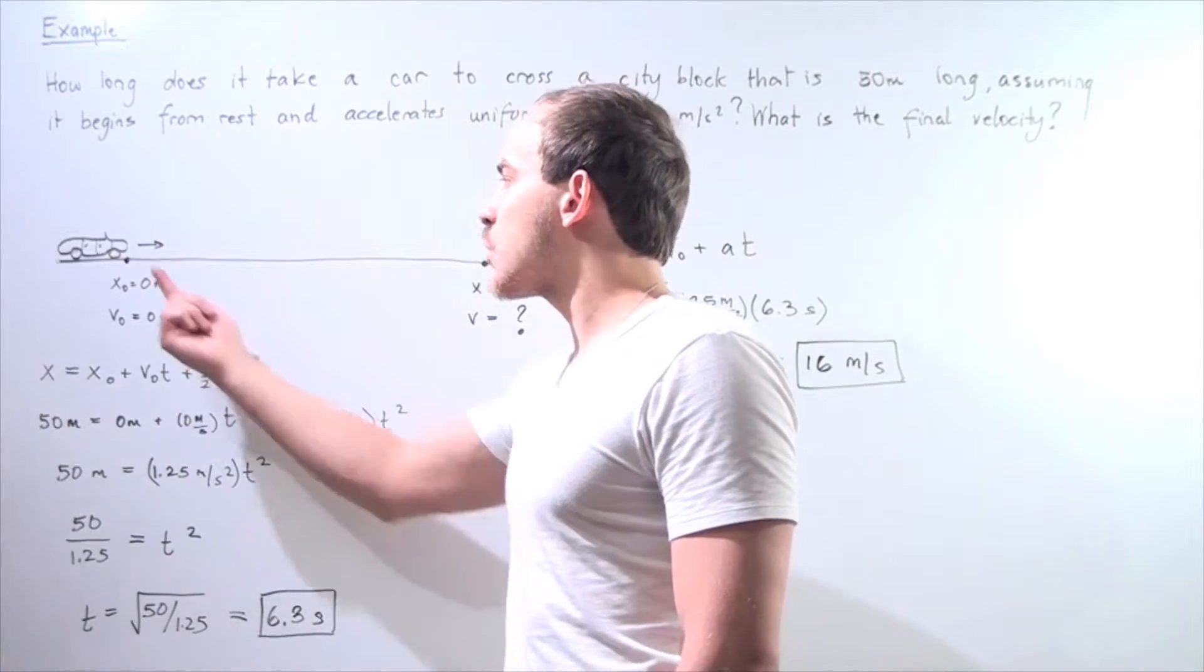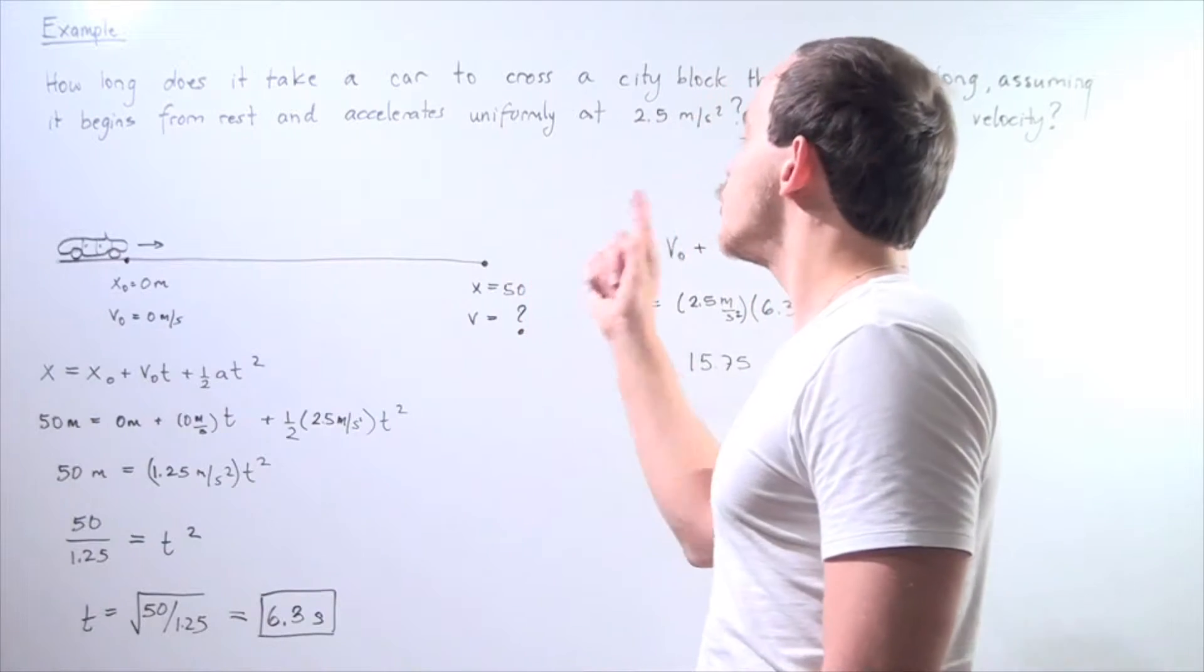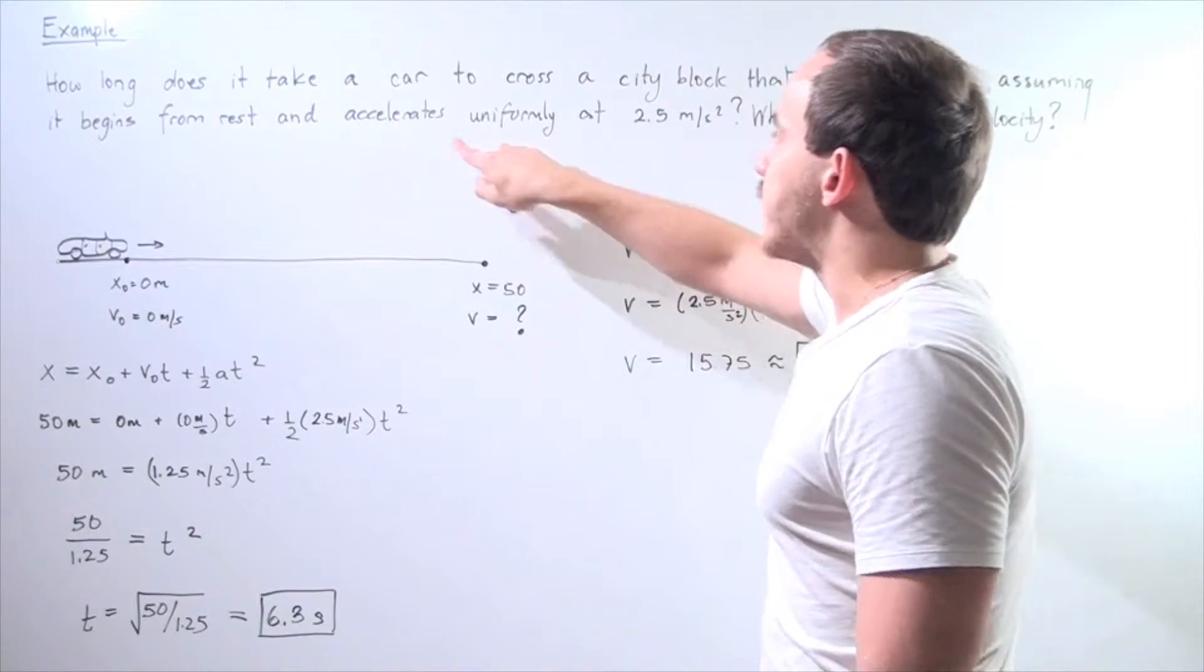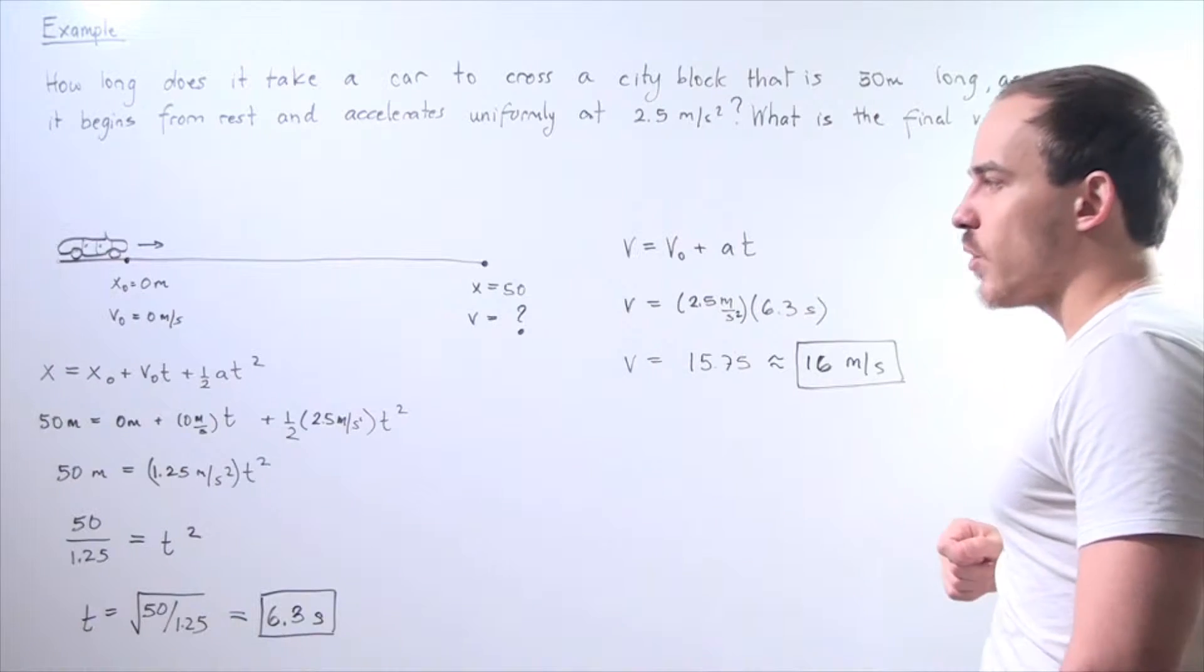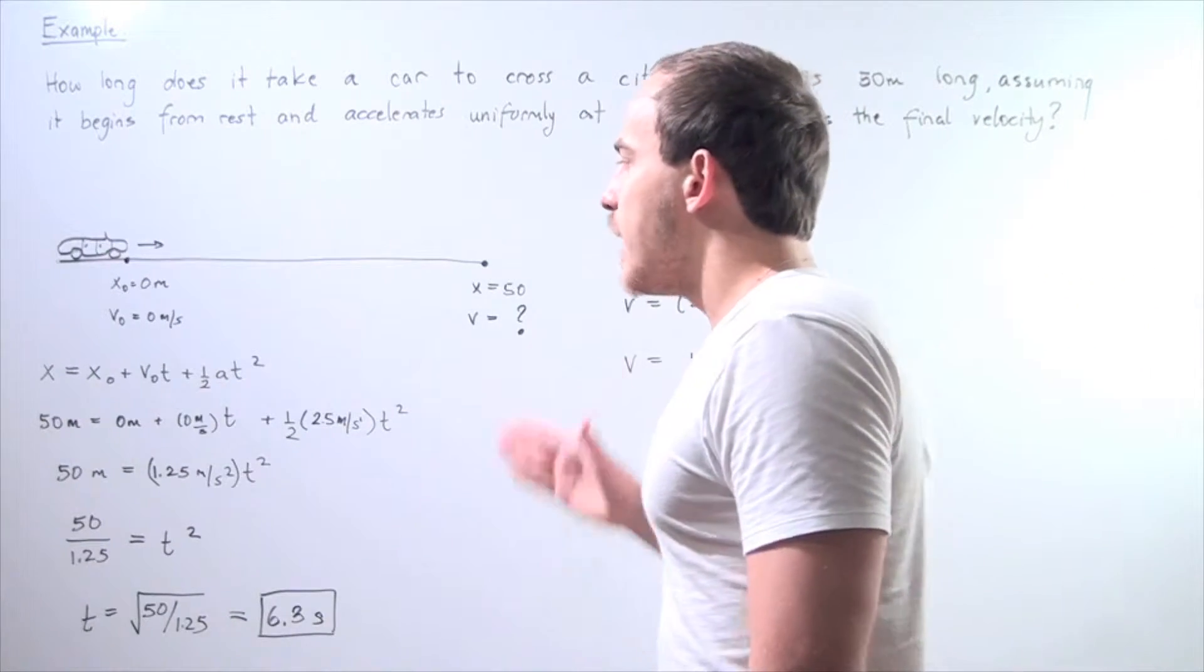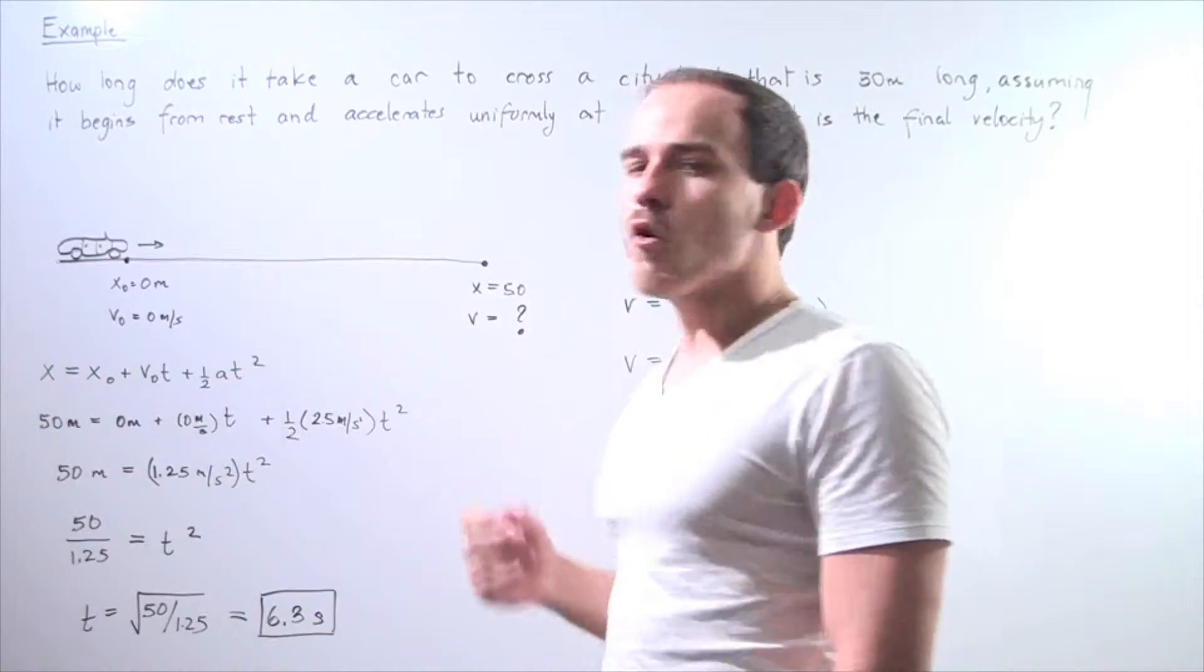In other words, how long does it take our car to travel this distance knowing that it accelerates uniformly at a rate of 2.5 meters per second squared? So, let's begin by using the following formula.